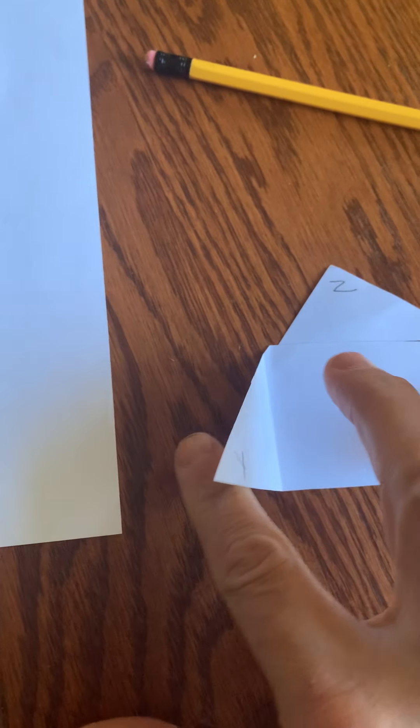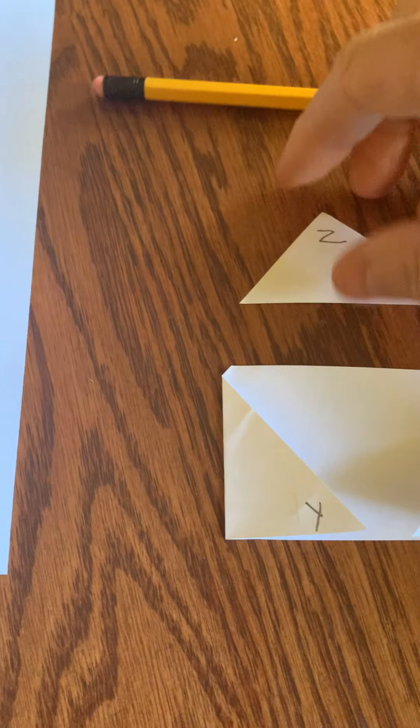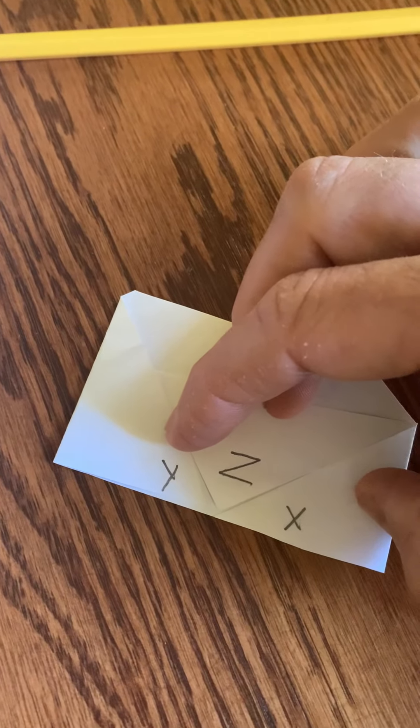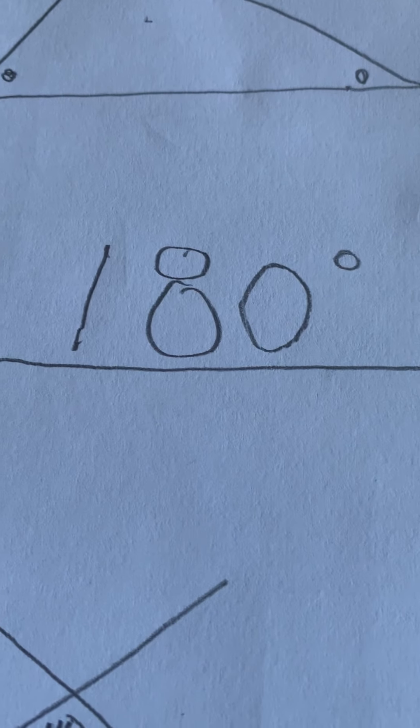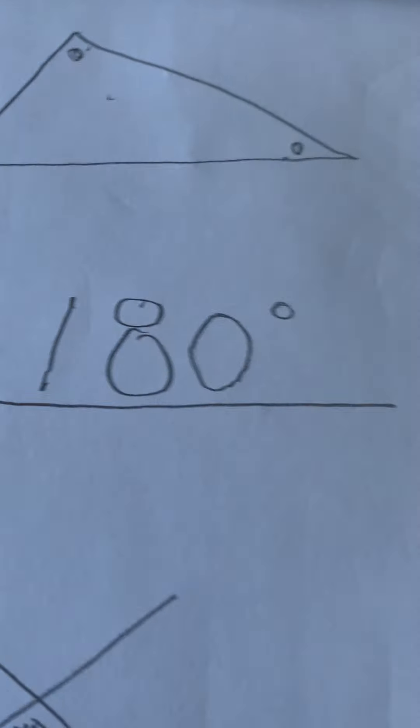If I took angle X and folded it in like this, and I took angle Y and I folded it in like this, no matter what those two angles were, if I take angle Z from the top and add it to them, and you could do this with any triangle and reassemble it, you get a straight line when you put all the angles together. And we all know that a straight line equals a total of 180 degrees. So no matter which triangle we take, when we take all three of the angles and put them together, we always get 180 degrees.